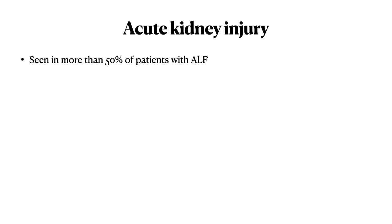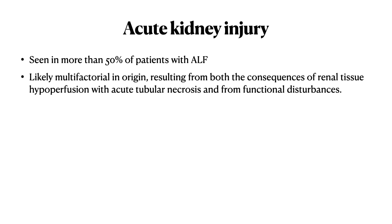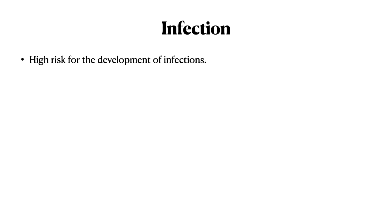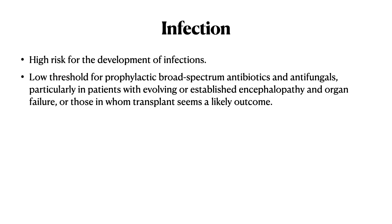Acute kidney injury is seen in more than 50% of patients with acute liver failure and is likely of multifactorial origin, resulting from both renal tissue hypoperfusion, acute tubular necrosis, and functional disturbances. Continuous dialysis is preferred over intermittent dialysis because it protects the brain. Regarding infection — a very important complication — these patients have a very high risk. A low threshold for prophylactic broad-spectrum antibiotics and antifungals should be maintained in patients with established encephalopathy, organ failure, or those planned for transplant.